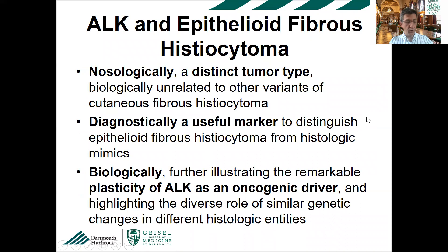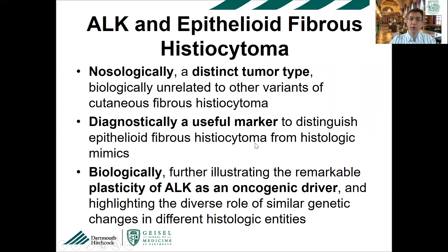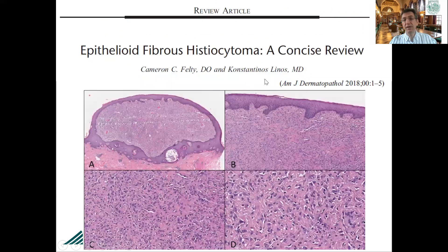Nosologically, we now know epithelioid fibrous histiocytoma is a distinct tumor type — not a subtype of dermatofibroma, which has a different pathogenesis with PRKCB mutations. ALK can be used as a diagnostically useful marker. Biologically, this illustrates the remarkable plasticity of the ALK gene as an oncogenic driver, highlighting its diverse role in giving rise to different entities with similar genetic pathogenesis. We wrote a review a couple of years ago that is still very up to date.